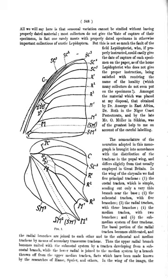Base/basal: area of wing region close to the point of attachment to the thorax. Brand: raised area on the wing surface, circular, ovate, or elongated, which is covered with special scent scales or androconia, found in males of some species; also called sex mark.